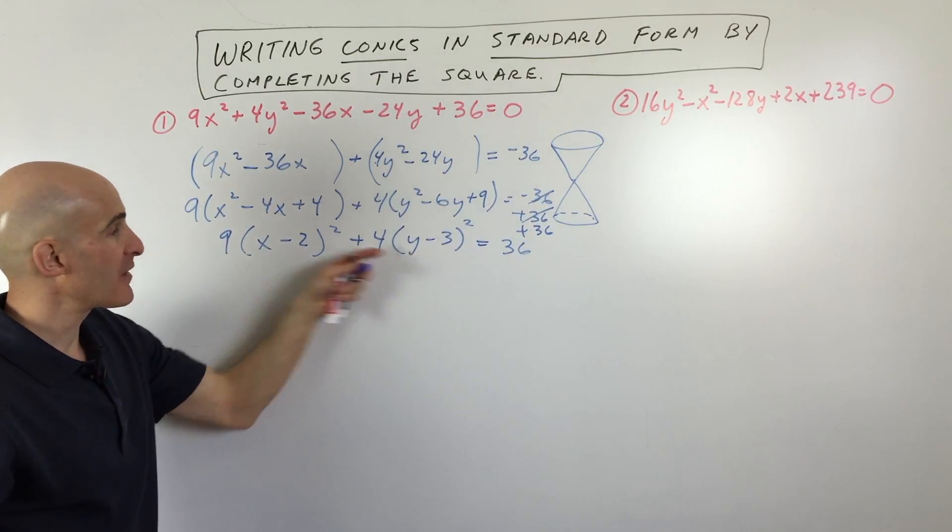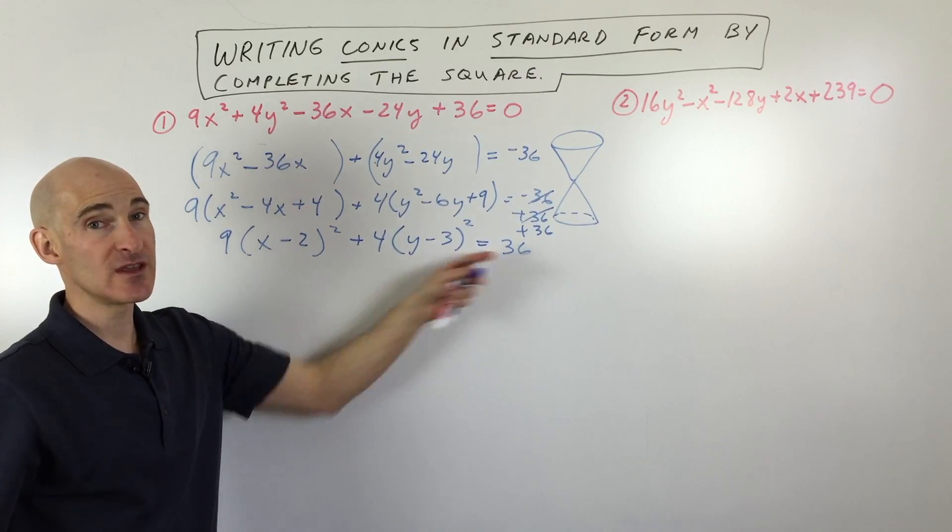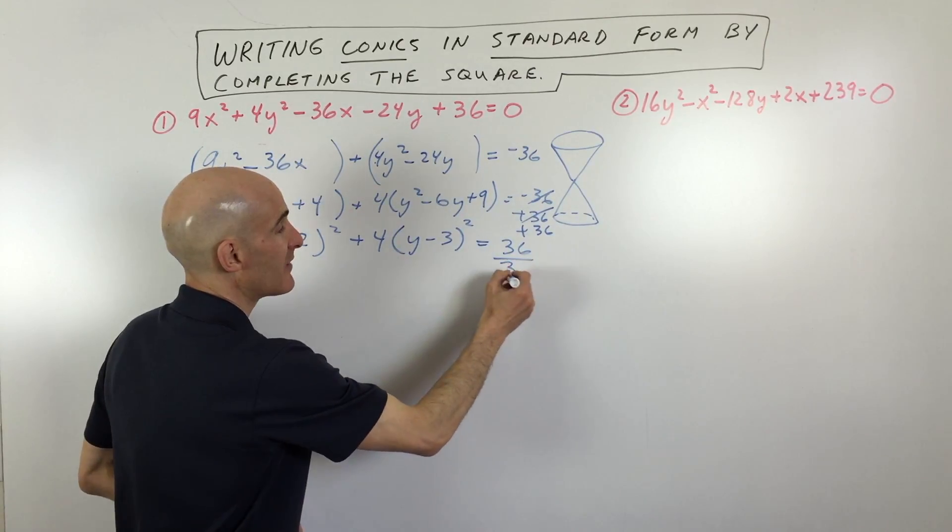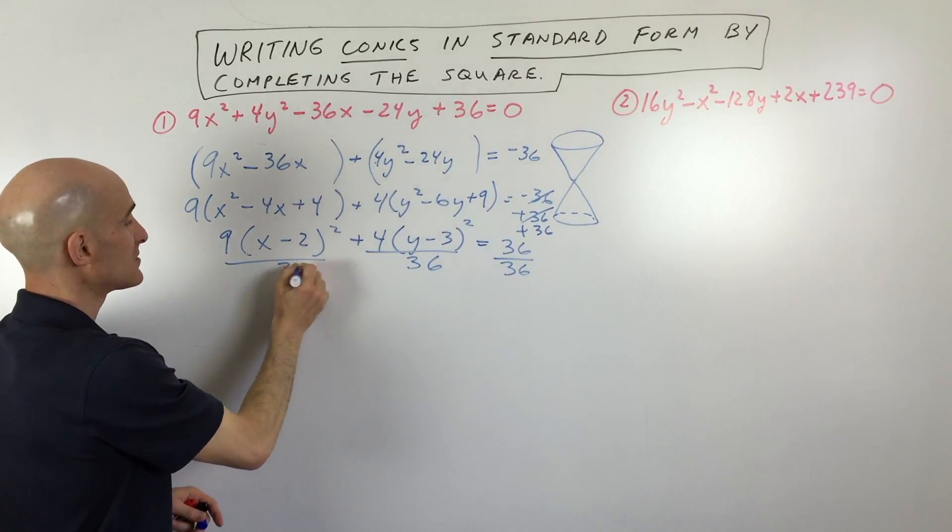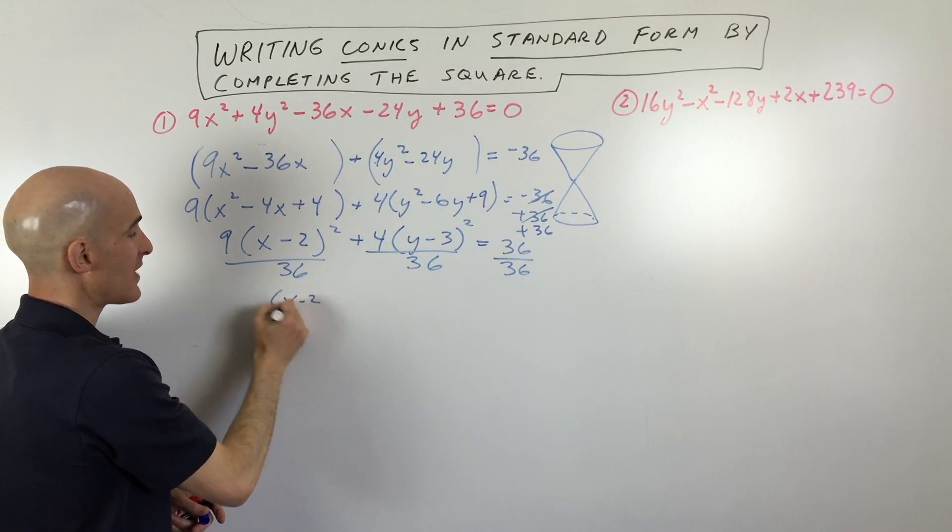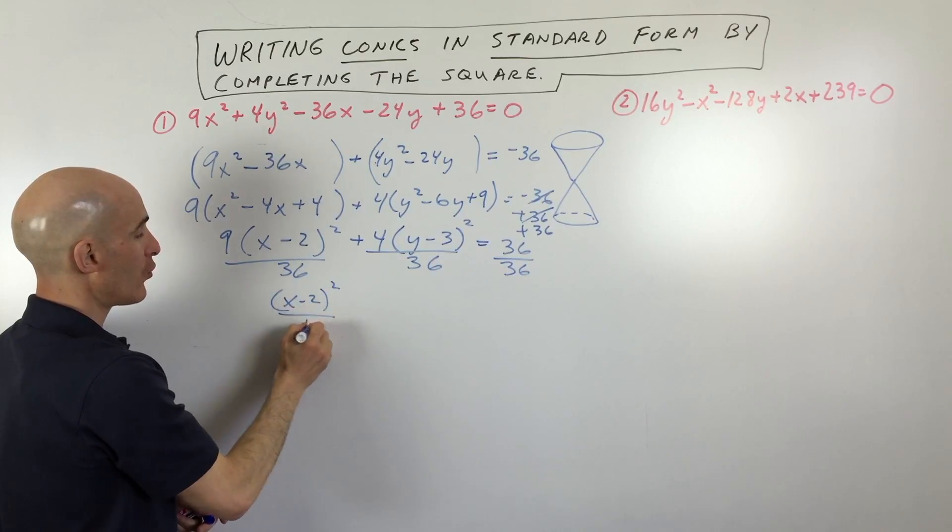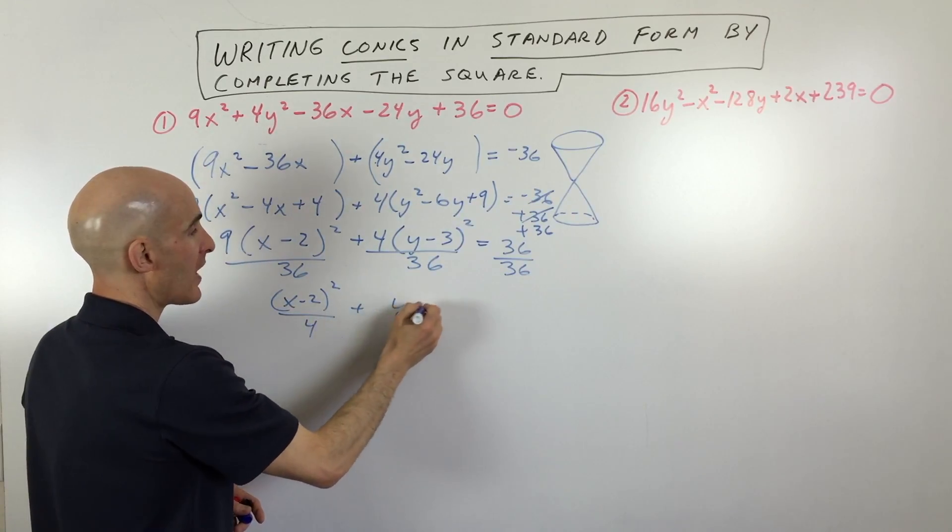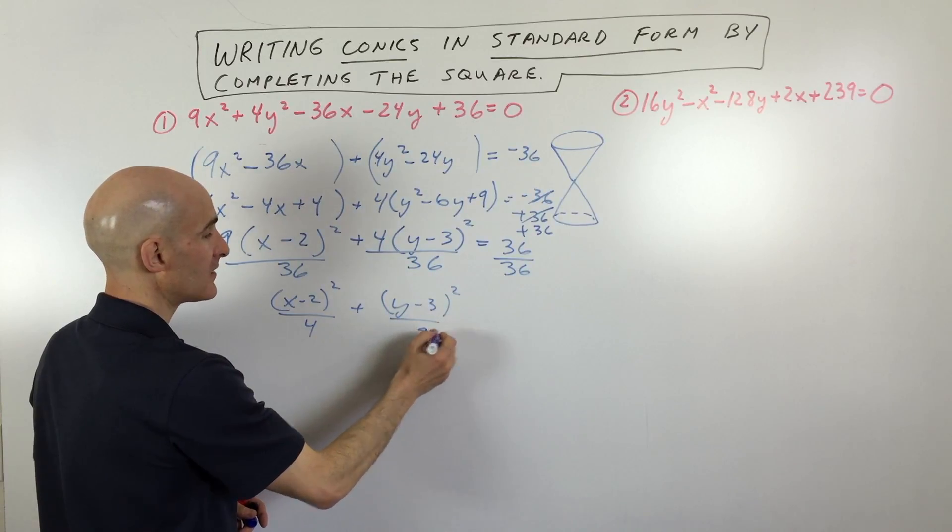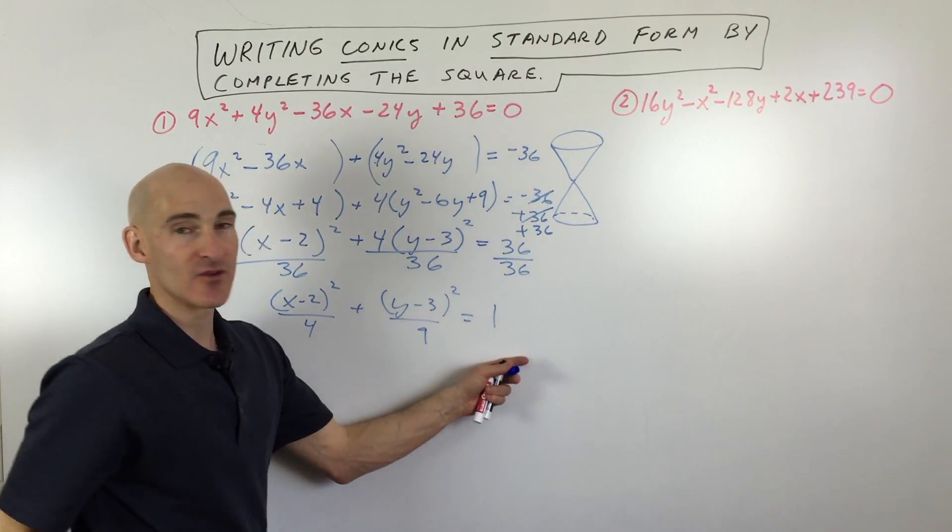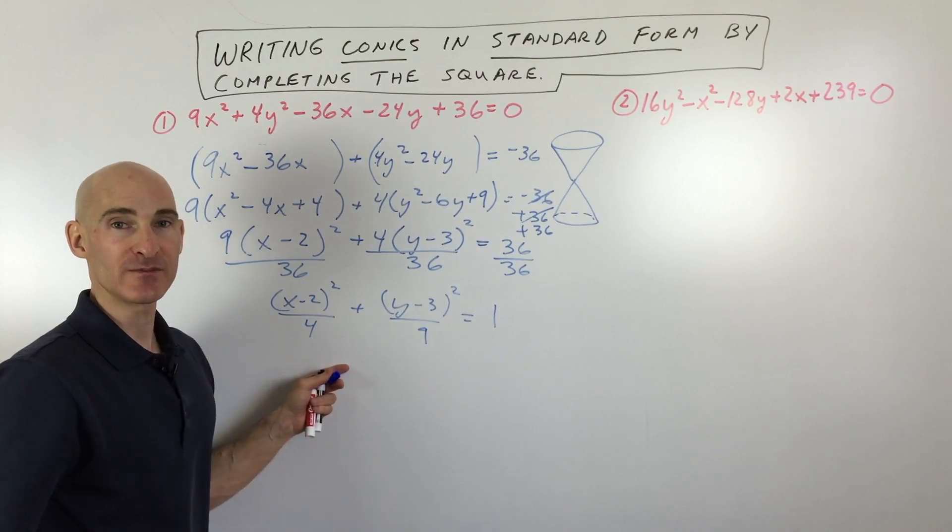Now what I'm going to do is I'm going to divide everything by 36 because ellipses, we want them to equal 1. So I'm just going to divide everything by 36. And so you can see this reduces to x minus 2 squared over 4 and y minus 3 squared over 9 equals 1. So now it's in the standard form for an ellipse.